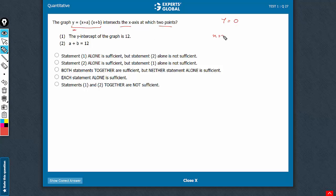we get x plus a times x plus b is equal to 0. Therefore, the values that we need are minus a and minus b. So if we know the values of a and b, the values of minus a and minus b can be known and the question can be answered.